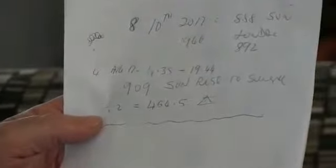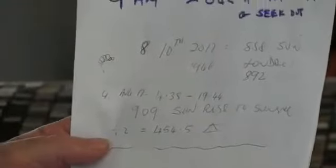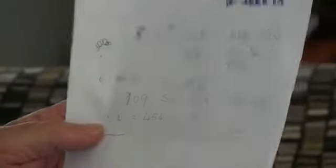So 9 is Gabriel, so they've got a 909 here. Now if you take the 909 and divide it by 2, you get 454.5, which is the height of the pyramid in feet.